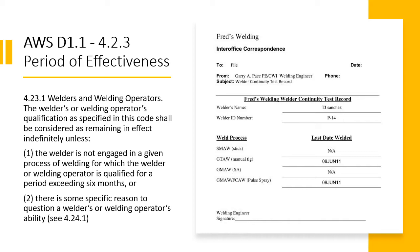For example: a welder qualifies with flux-cored arc welding and gas tungsten arc welding. If the majority of work in the shop is flux core and that welder goes for a year without using gas tungsten arc welding, then those GTAW qualifications are null and void. That's why we have what's called continuity — you try to keep track of the fact that your welder has used each welding process every six months.